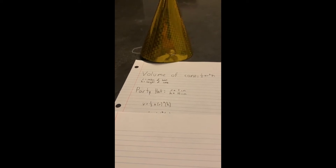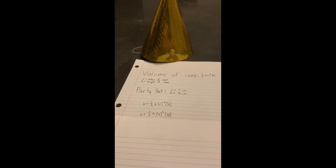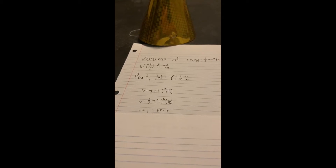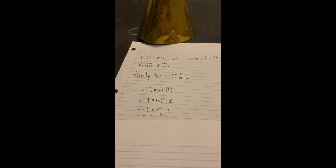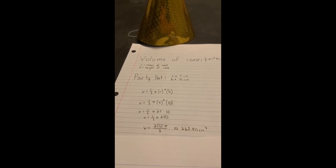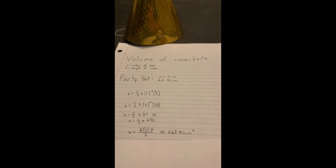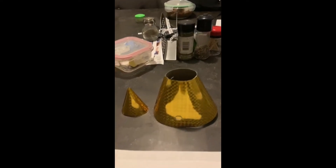So now we plug in the 5 and the 10 where they need to be. I'll use PEMDAS: first I find the exponent, so 5 squared is 25. Then I multiply by 10 to get 250 times π, divided by 3. At the very end I get 250π/3, which is about 261.8. And don't forget your units — centimeters cubed — because it's volume.